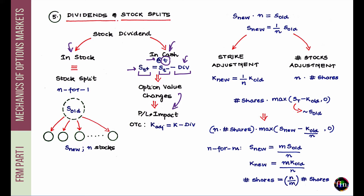In the exchange-traded world, a cash dividend is not accounted for — you have to live with this PnL impact. In the OTC world, you can have options where, as part of their design at initiation, dividends are accounted for by incorporating a feature in which the strike of the option is also adjusted by the dividend amount when the dividend occurs. But for exchange-traded options, nothing is done when a cash dividend is paid.